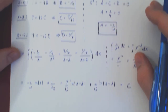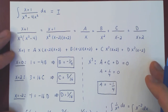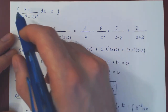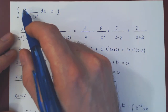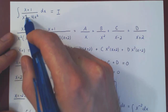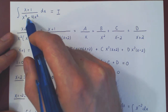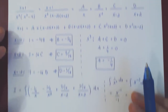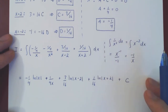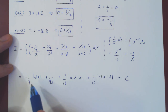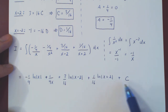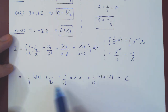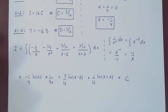Going back to the original integral — the integral of x plus 1 over x to the 4th minus 4x squared — using the method of partial fractions yields this non-trivial answer. And that's it.